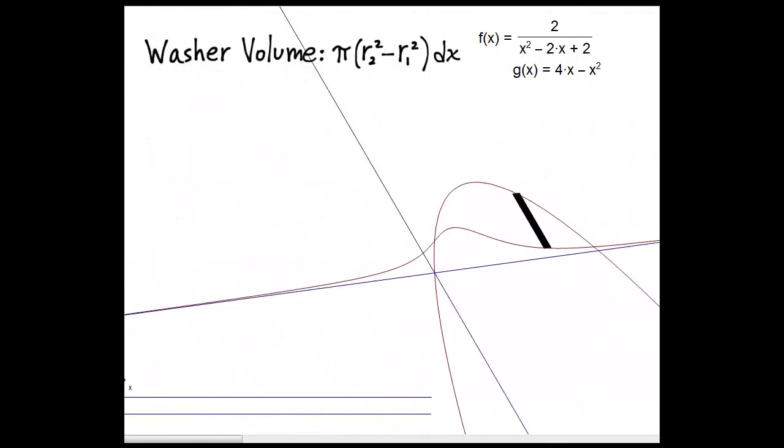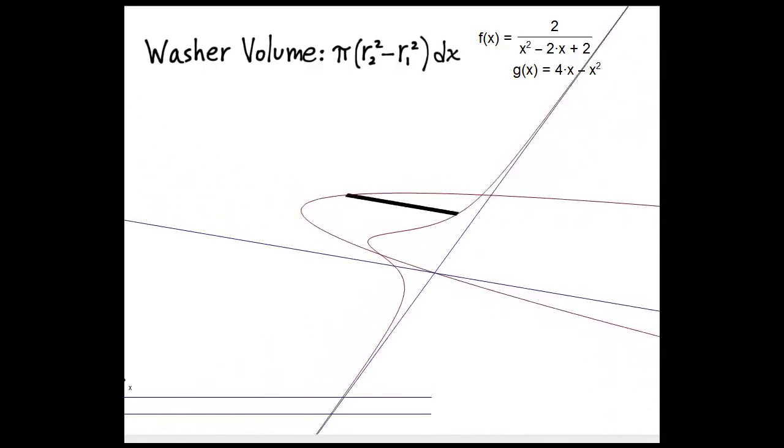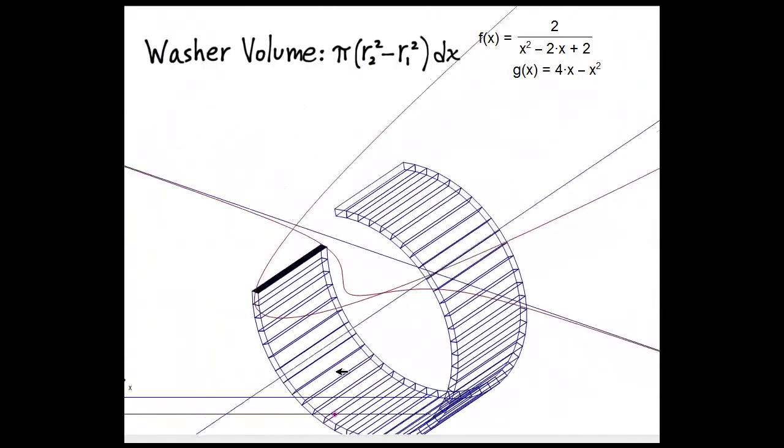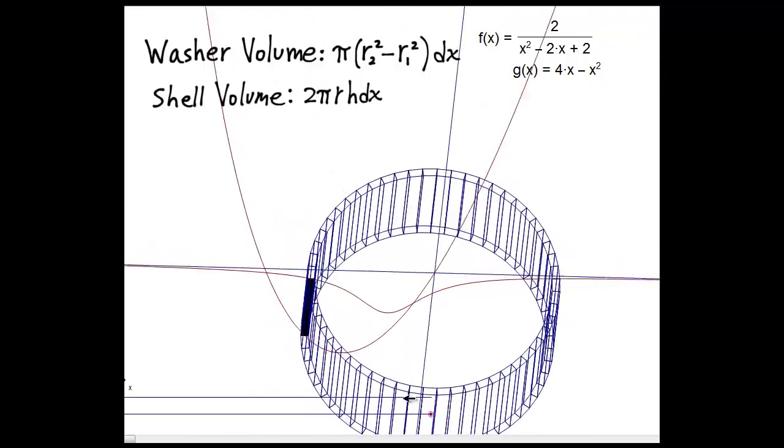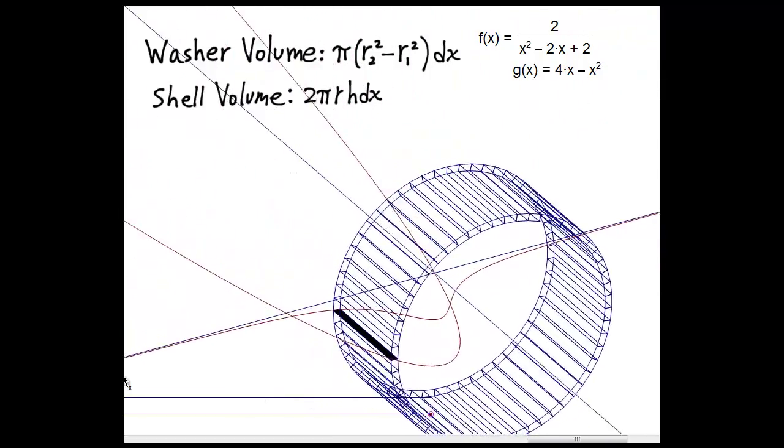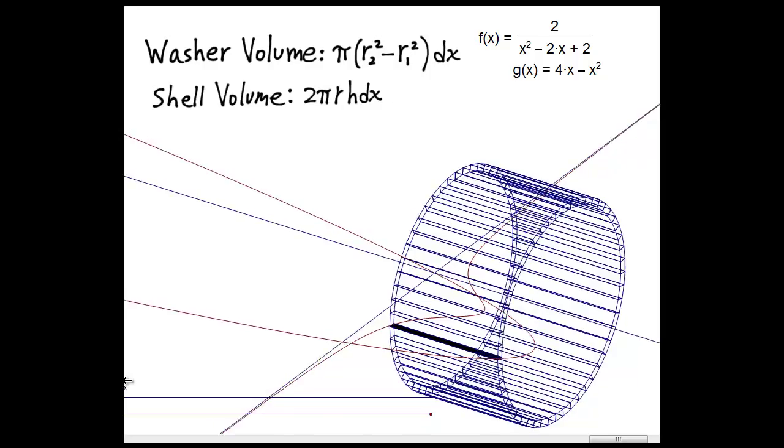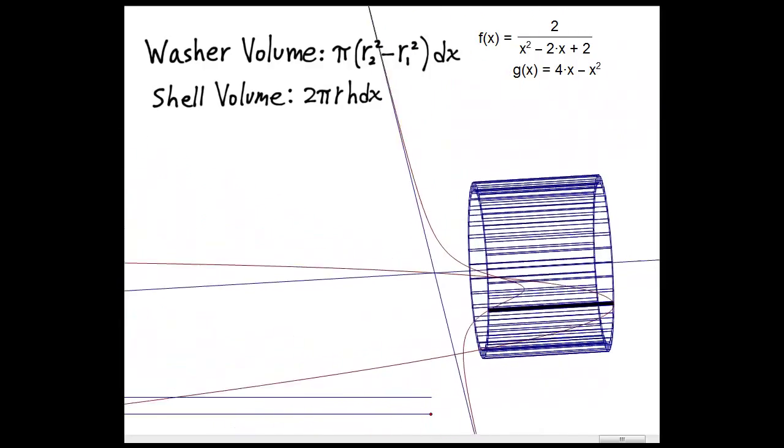Now let's go to a shell. If we revolve the same slice about the y-axis, we get a totally different shape. This is a cylindrical shell. And here are the different shells in the region.